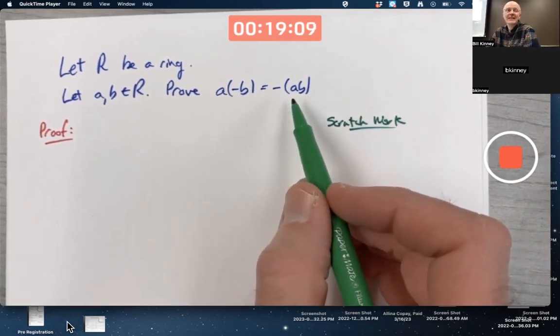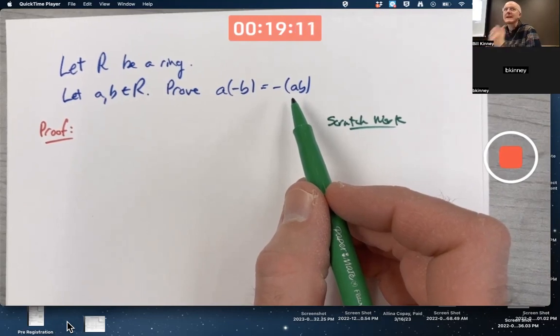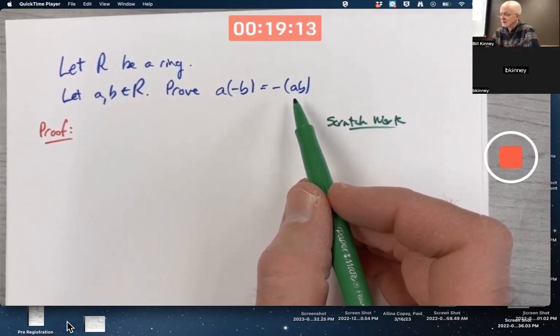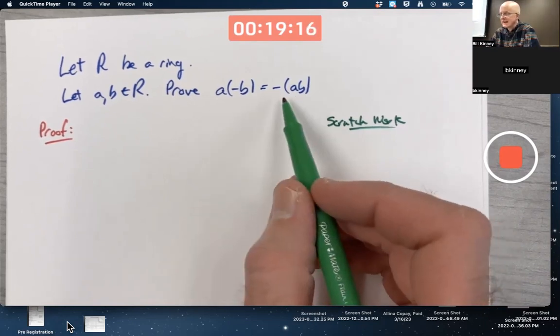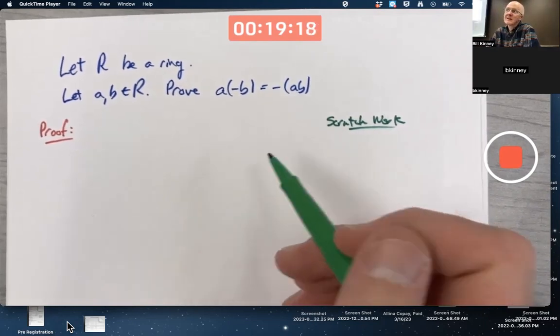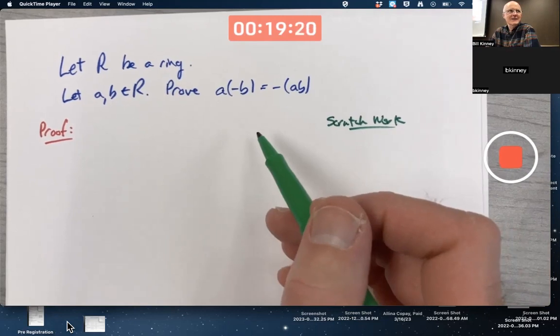And you really should think in terms of that language in your mind, at least additive inverse. Yes, you could say negative B and yes, you could say negative of AB, but these are not necessarily numbers.